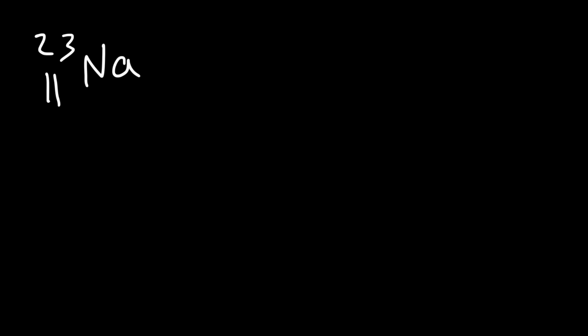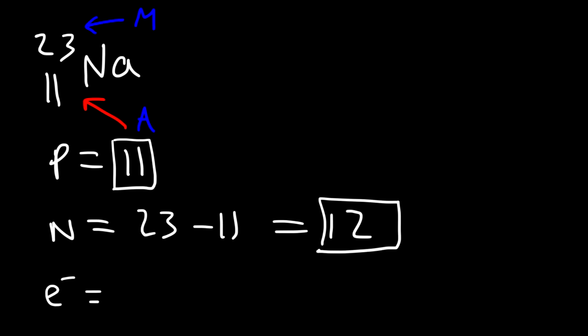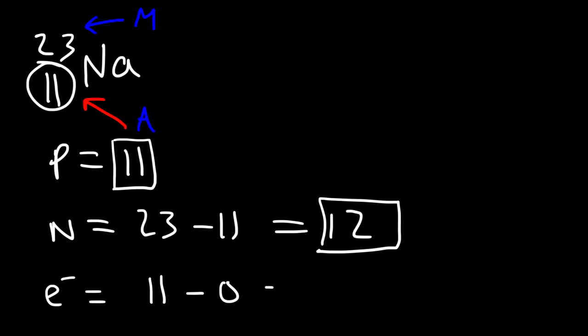Let's start with this example: calculate the number of protons, electrons, and neutrons for this element. The number of protons is equal to the atomic number, the smaller of the two values, so that's 11. The number of neutrons is the mass number (23) minus the atomic number (11), so 23 minus 11 gives us 12. For the number of electrons, it's the atomic number (11) minus the charge — there's no charge, so it's zero — giving us 11 electrons. As we can see, for electrically neutral atoms, the number of protons and electrons are the same.